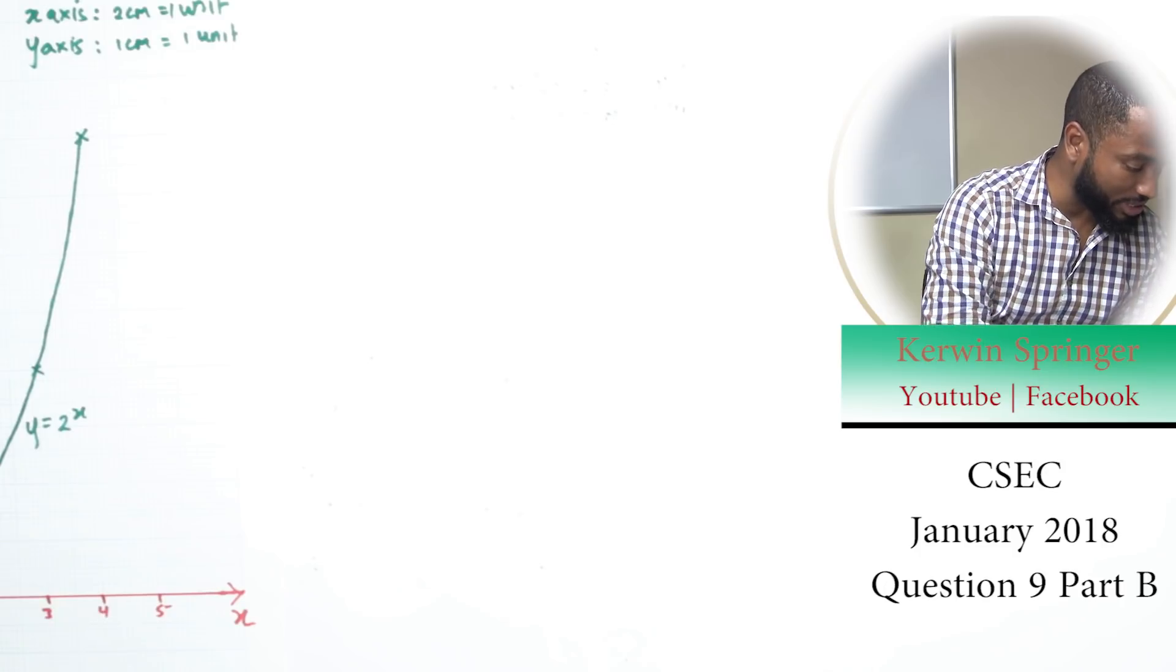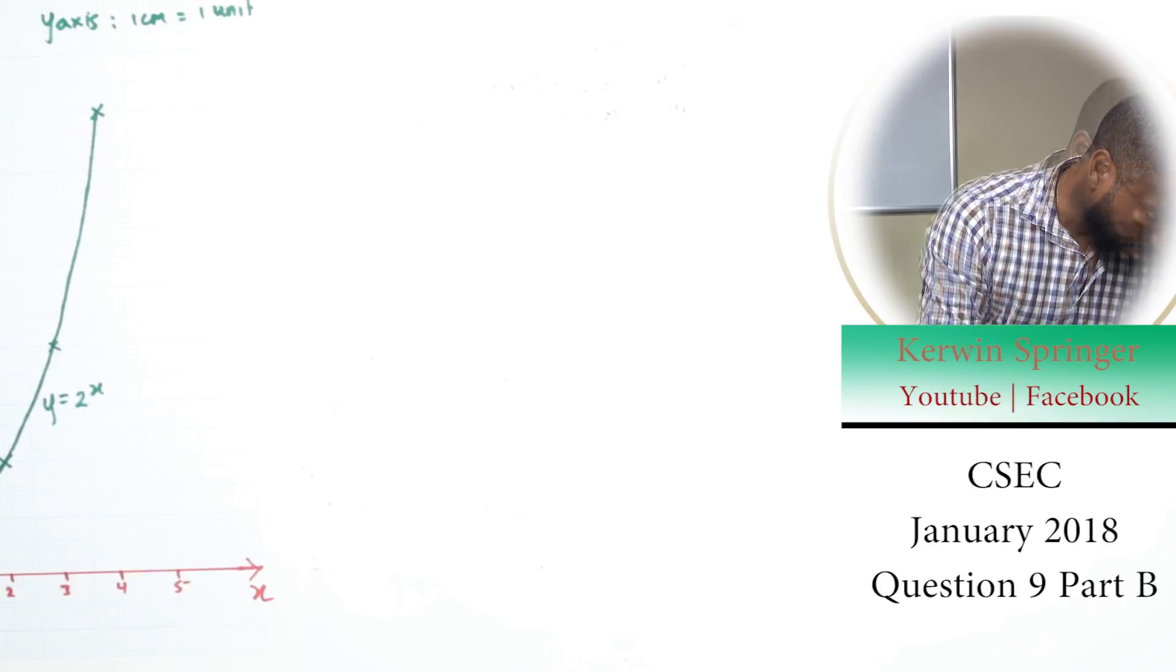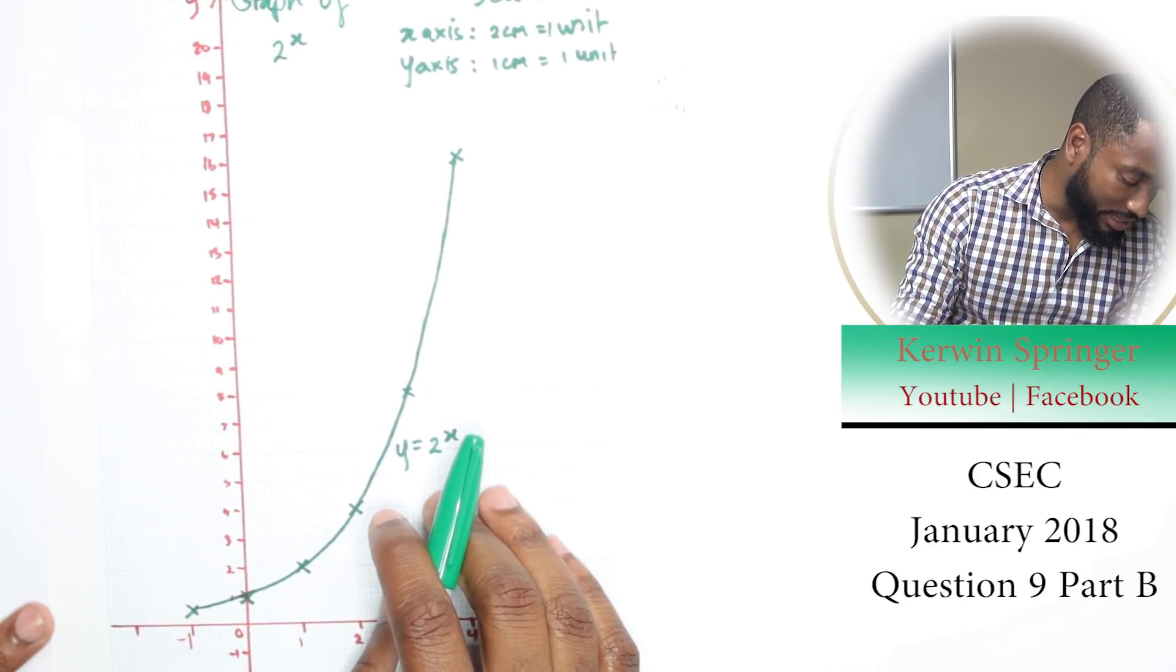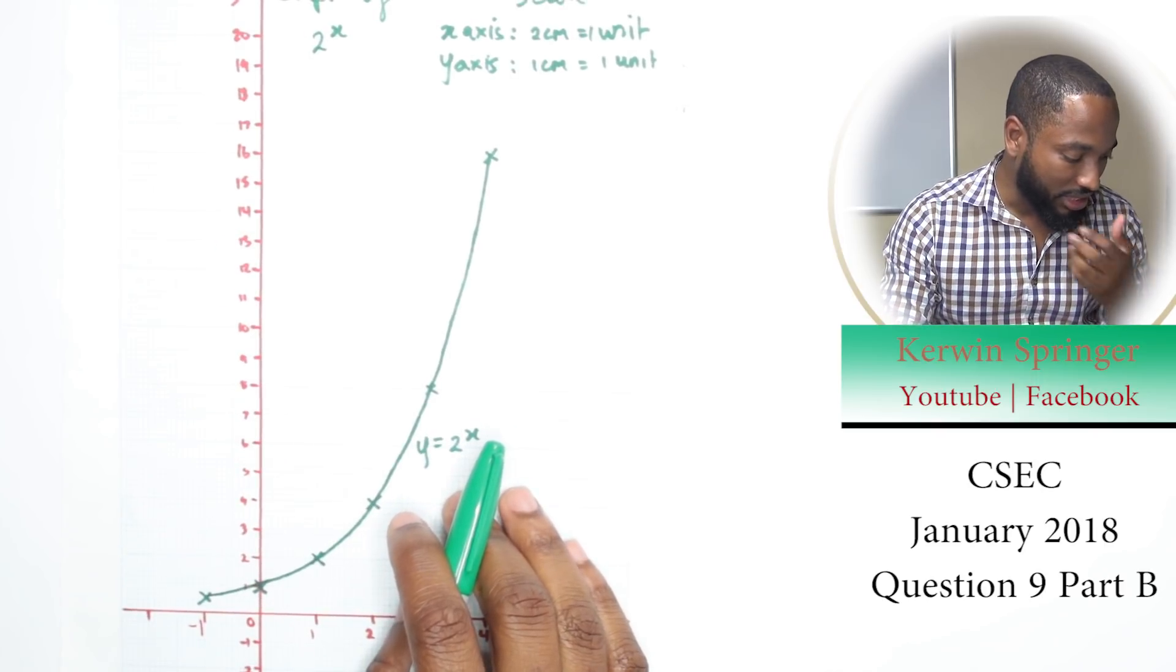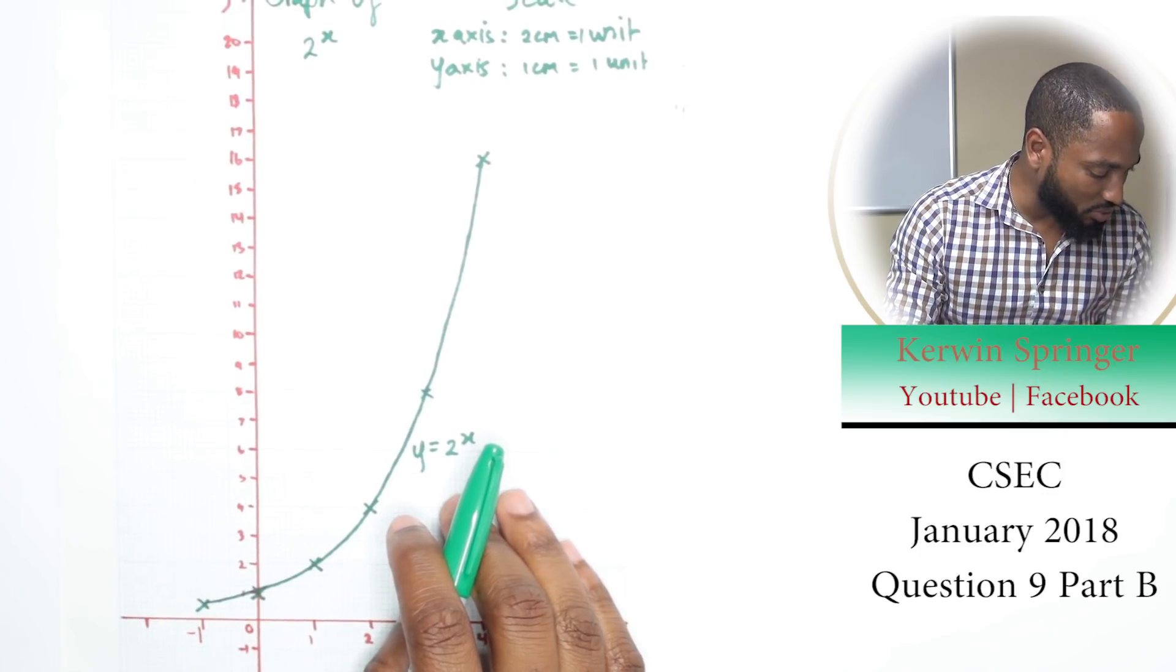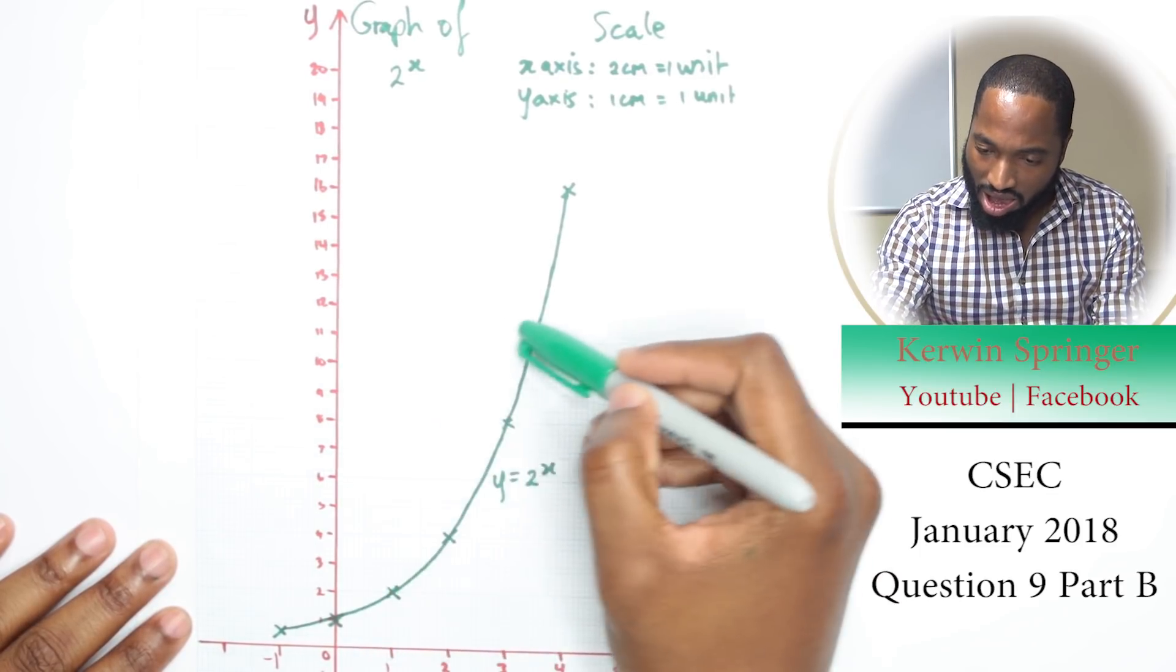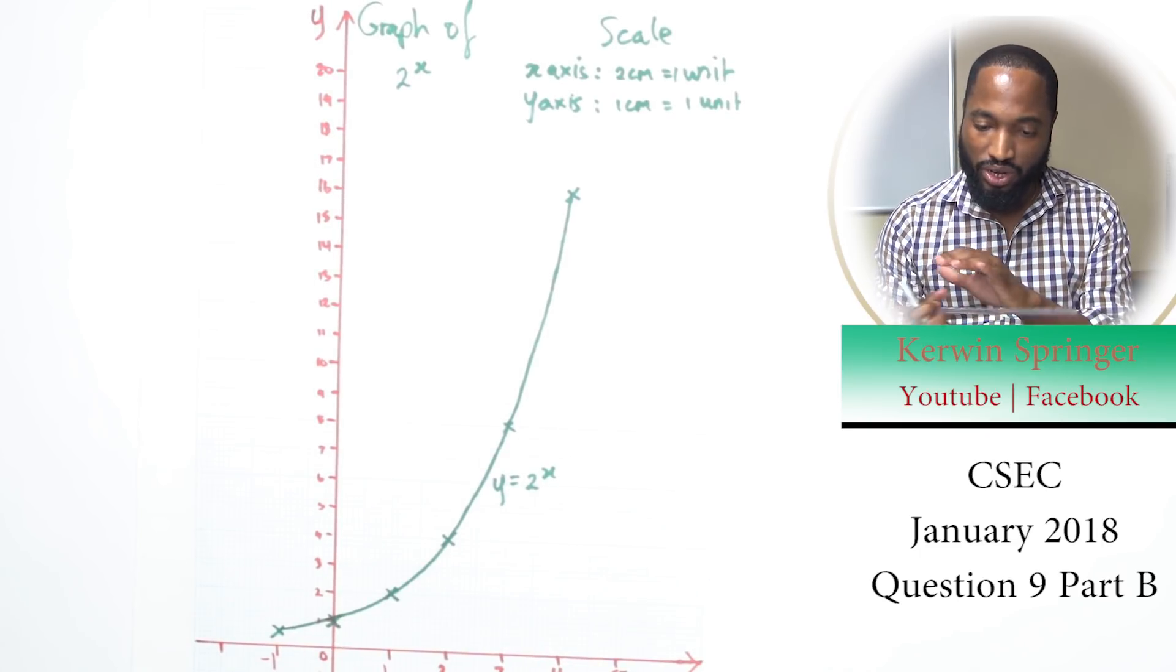So the final piece in the question asks us to draw some appropriate lines on the graph to determine the value of x for which 2 to the x is equal to 11. Well, what is 2 to the x really? 2 to the x is y. So when is y equal to 11? You need to find the value of x.